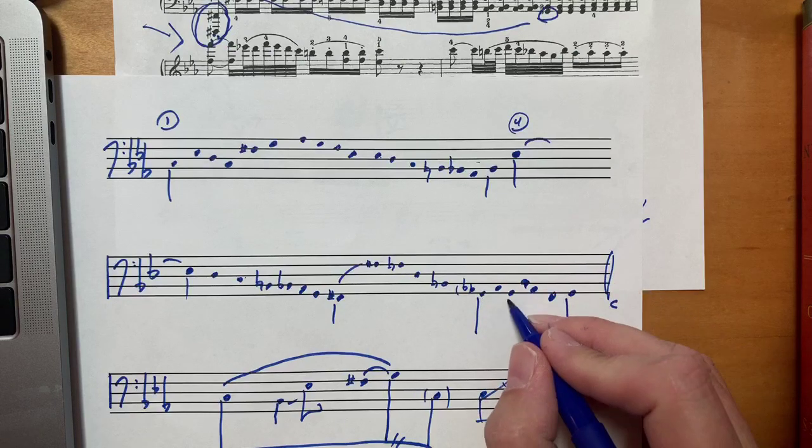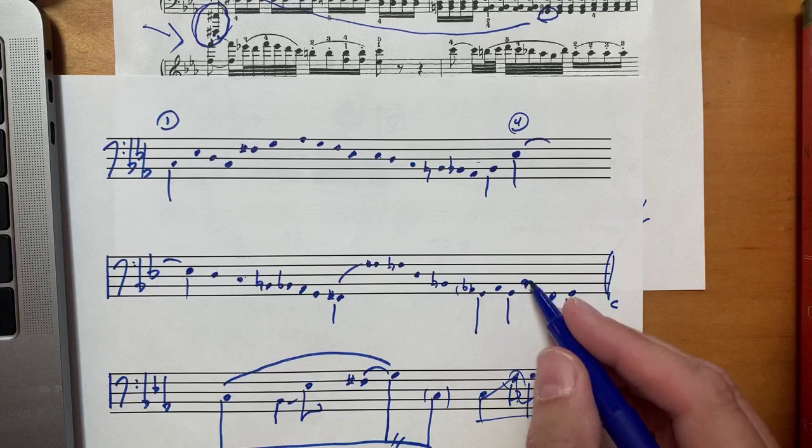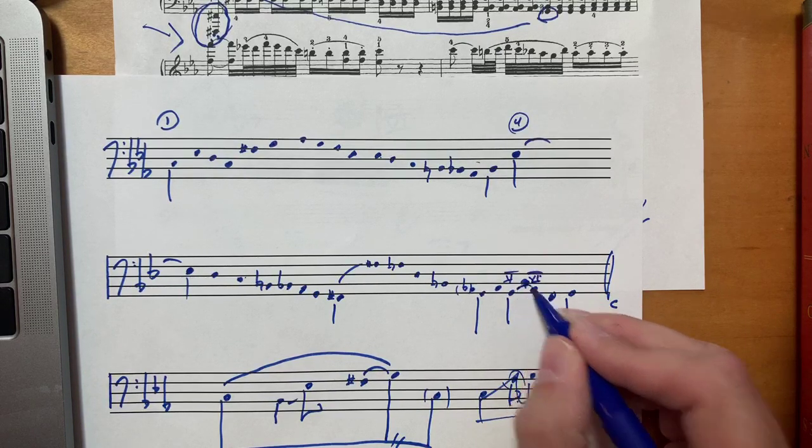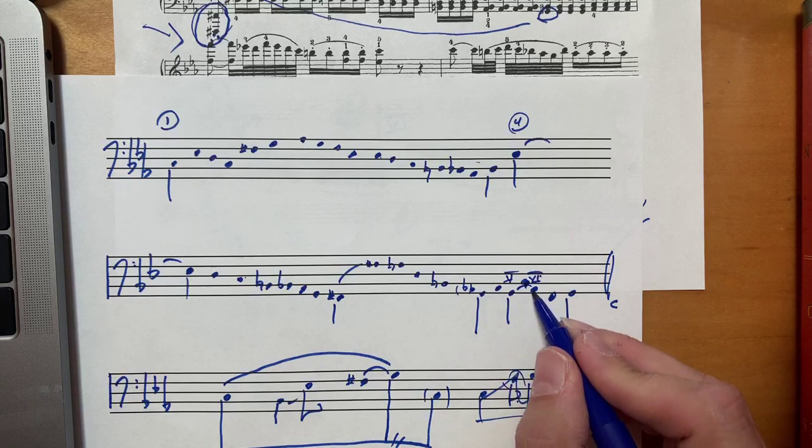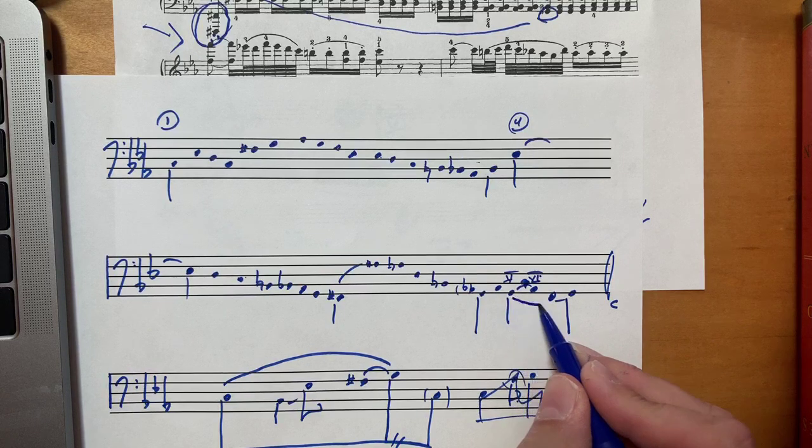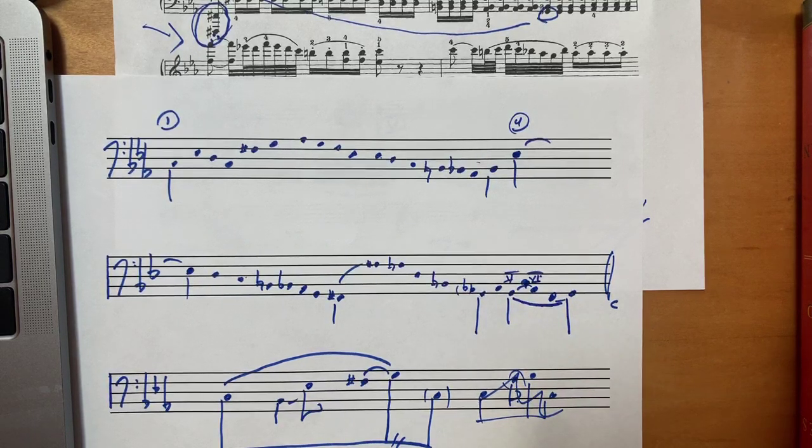But here you can really see that this progression is, in fact, a double neighbor around G. This 5 going to 6 is an upper neighbor, and then the F going to G is a lower neighbor. And overall, this is a double neighbor figure on the G. So that's interesting, I think.